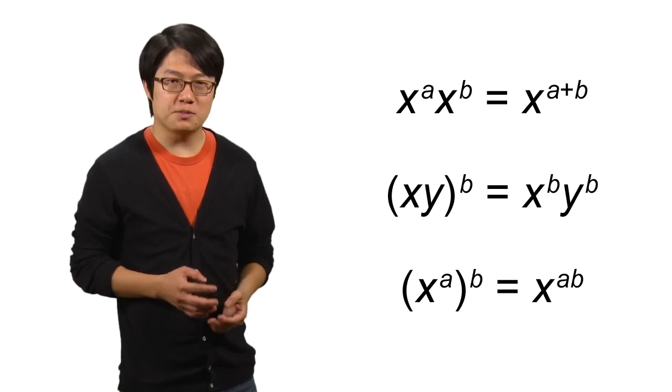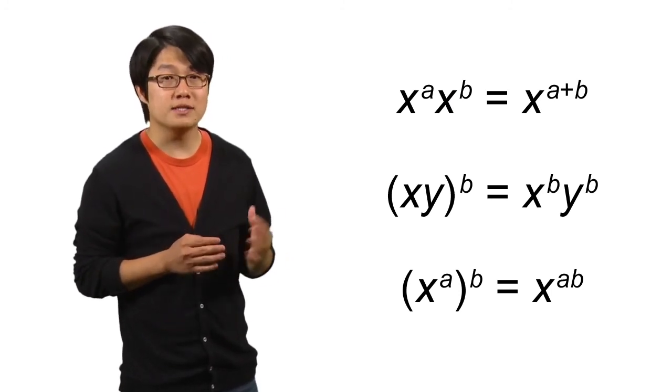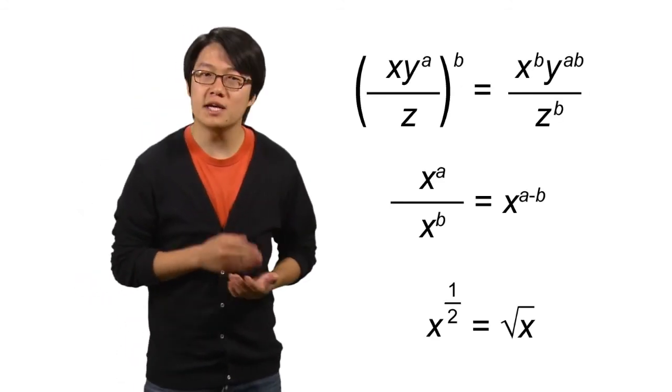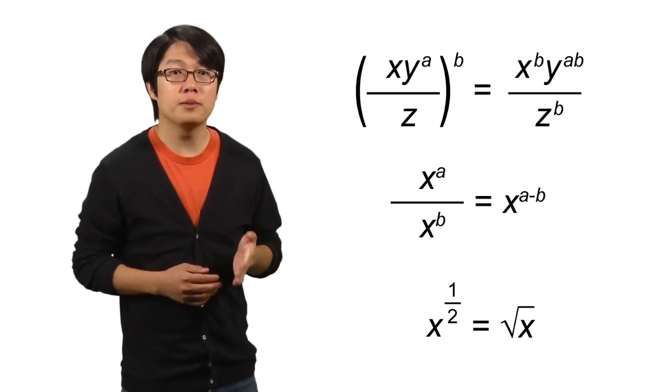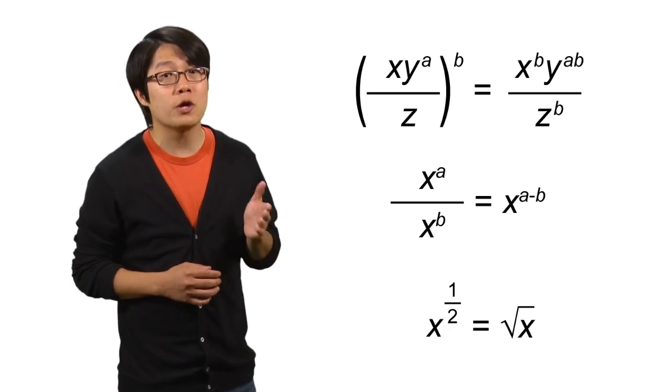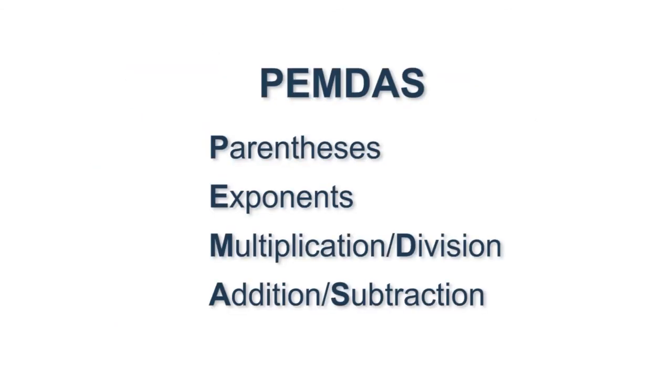So when you need to simplify an expression that includes exponents, you could take the time to memorize these three rules. But if you remember that exponentiation is just repeated multiplication, and that you can multiply terms in any order, you can always derive them and other more complicated rules yourself.